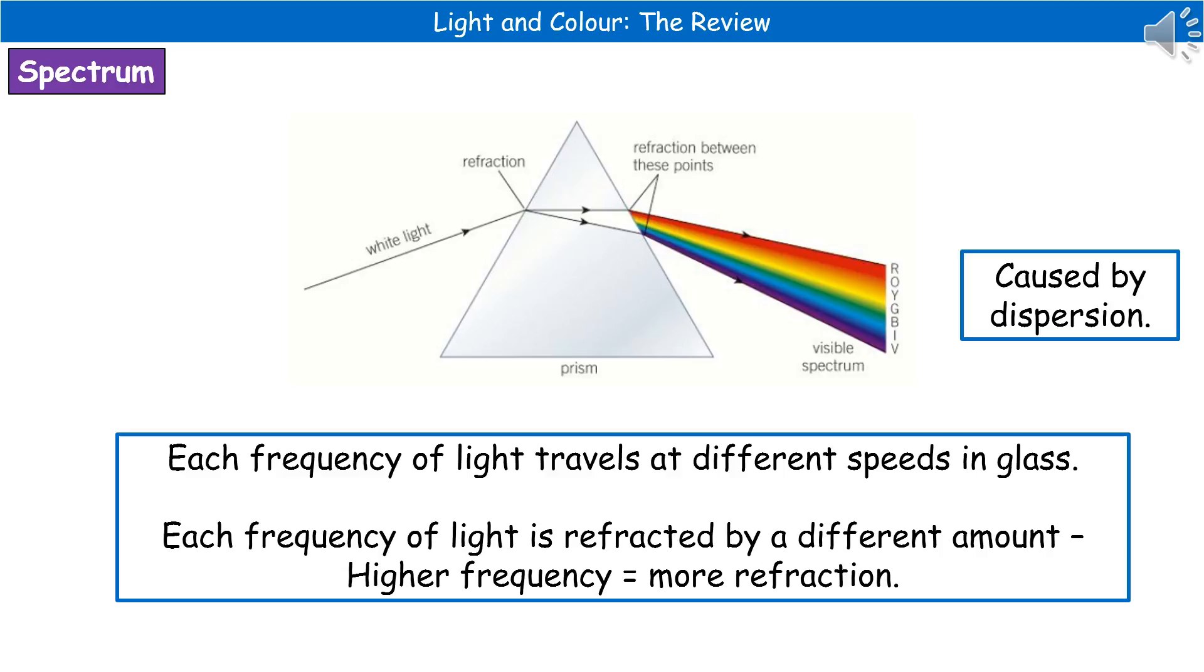Now, what we're actually seeing there is the effect of dispersion. What we find within our white light, we've got different frequencies. Each frequency of light will therefore travel at a slightly different speed within the glass. So because of that, we refract it by a different amount.